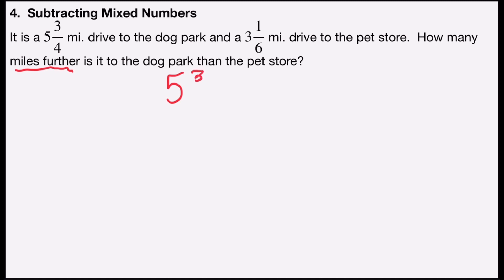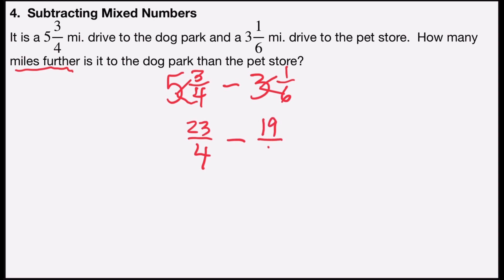So 'how many miles further' indicates subtraction, and we're going to take five and three-fourths and subtract three and one-sixth. To subtract mixed numbers, I like to change them into improper fraction form, meaning the numerator is higher than the denominator. I'll multiply four times five, which is 20, and add three, giving 23 over four. Minus: six times three is 18, add one, giving 19 over six.